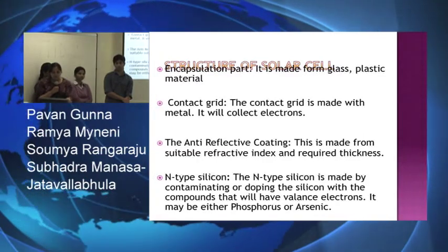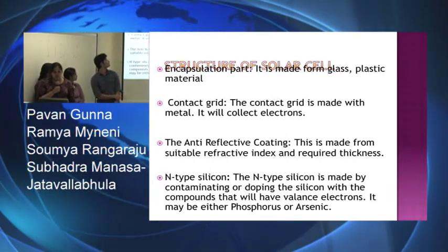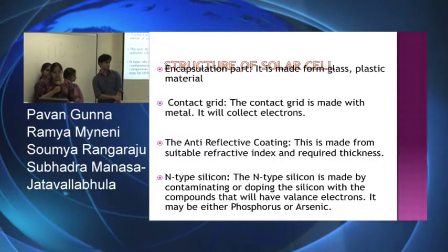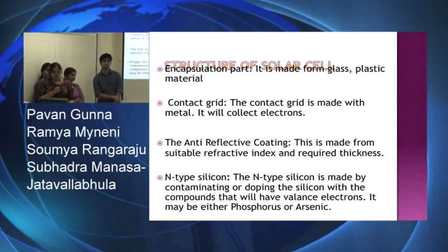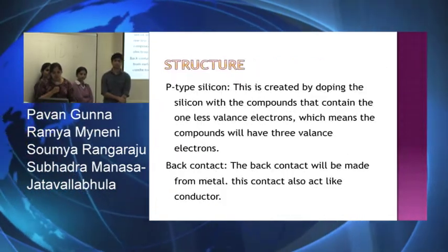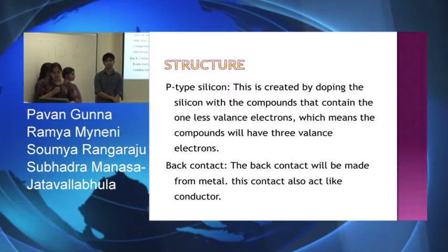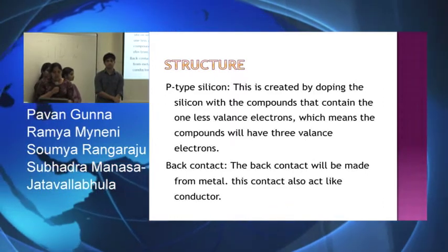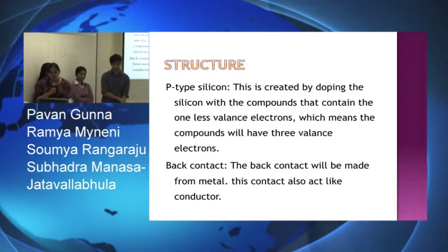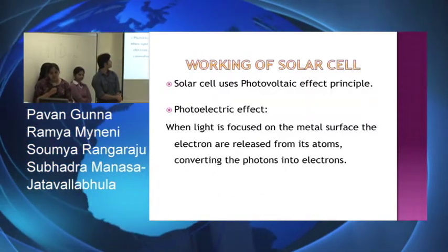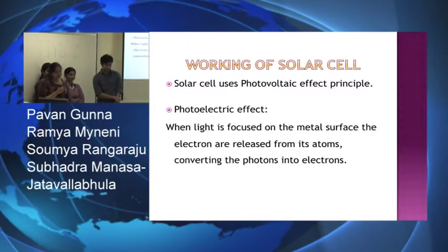The fourth part is the n-type silicon, made by doping silicon with compounds that have extra valence electrons, either phosphorous or arsenic. This process requires four electrons and the fifth electron is used for conduction. The fifth part is the p-type silicon, made by doping silicon with compounds that contain one less valence electron, and here a hole is created. The sixth and last part is the back contact, made from metal, which covers the entire back surface of the solar cell and acts as a conductor.